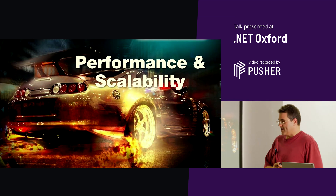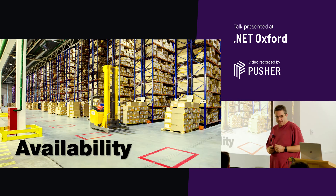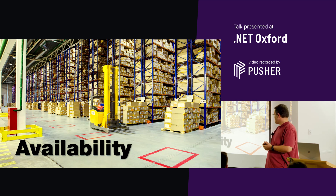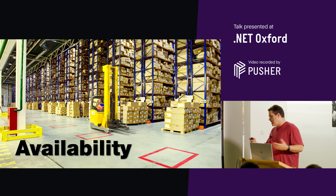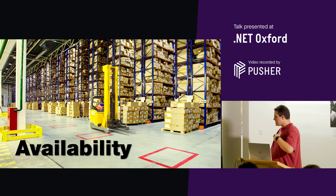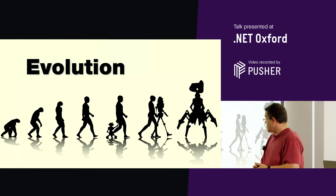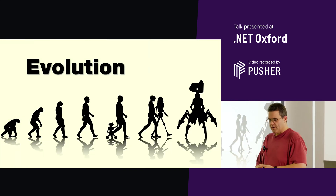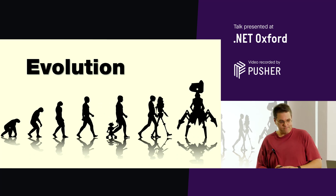Performance and scalability — another very key ility. Will our system run fast enough and scale in the right way? Availability: is it going to keep running when things go wrong? How do we deal with disaster recovery, backup, and failing over in the event of things not working? Have we designed to expect failure within our system? And finally, evolution — how are we going to maintain and grow our solution over time?